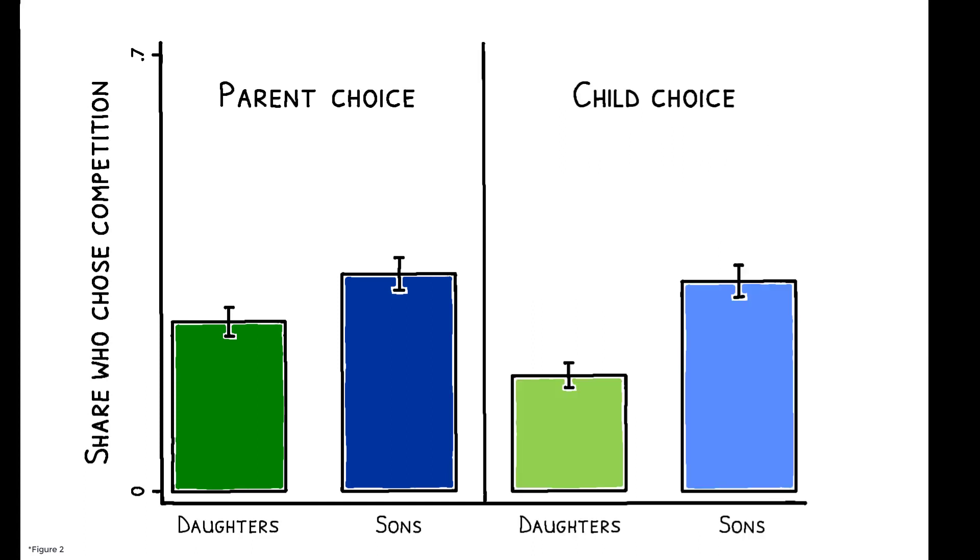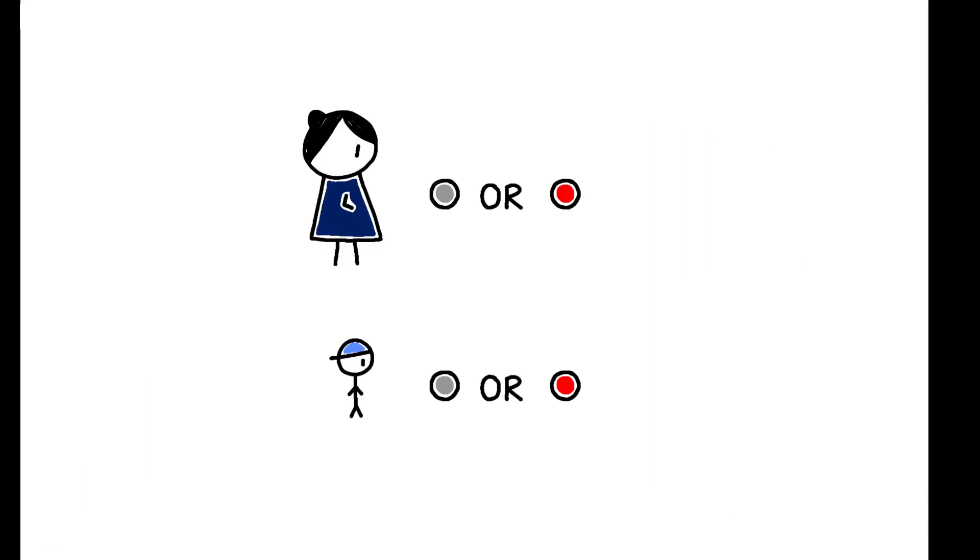And while the aggregate patterns are similar, parents' choices often diverge from those of their child. In 32% of cases, the parent and child choose differently.